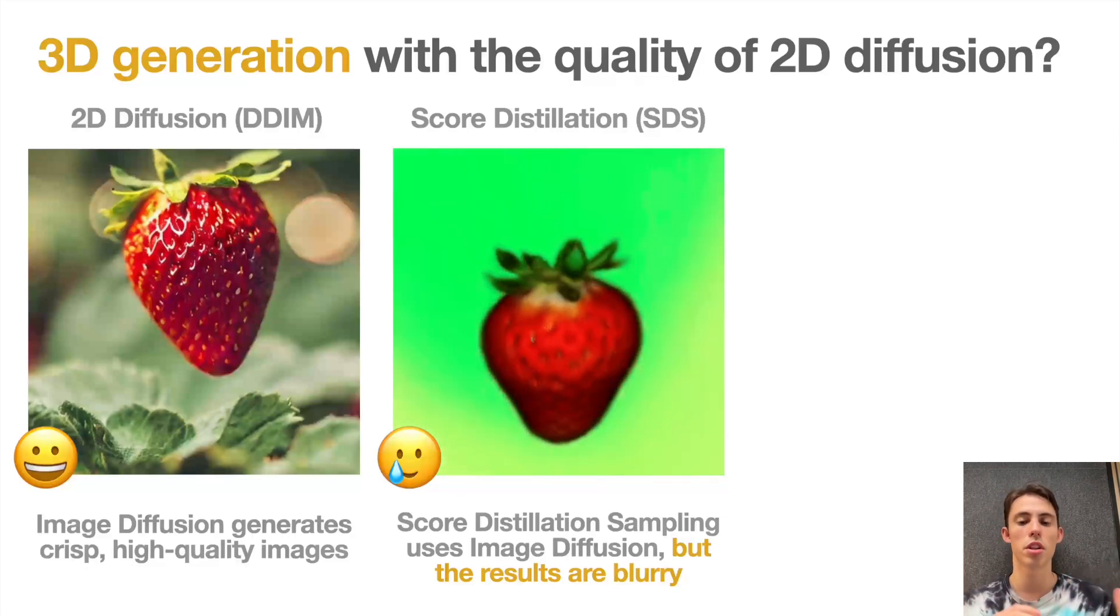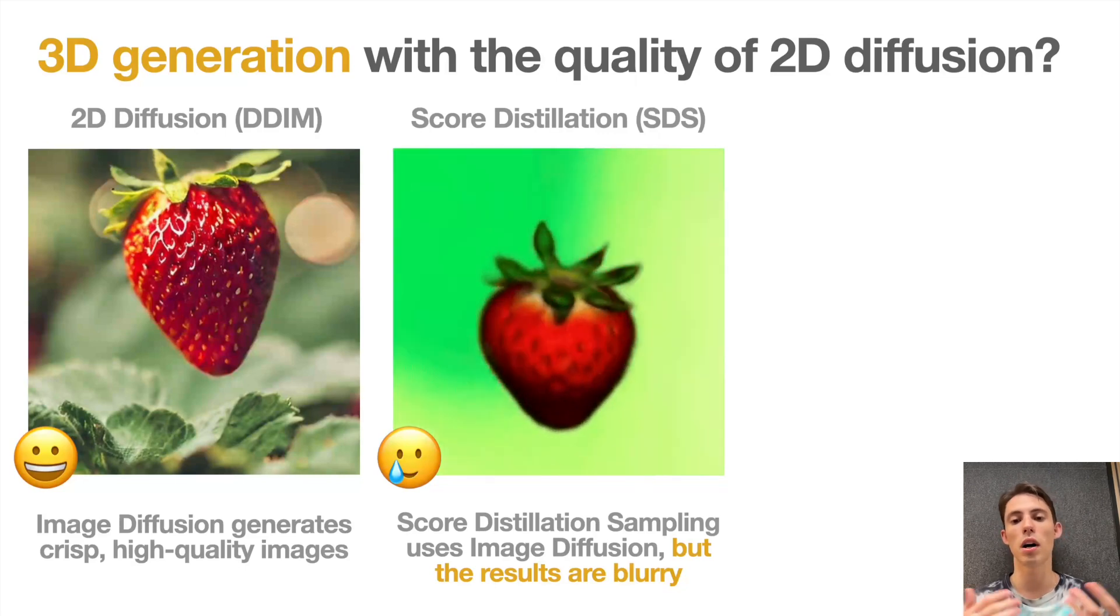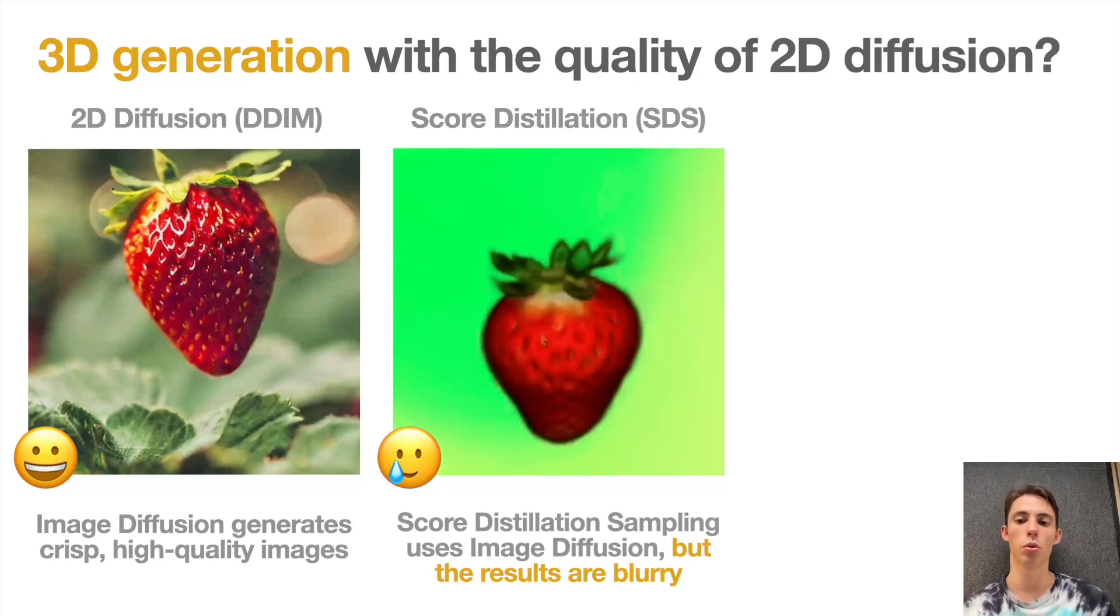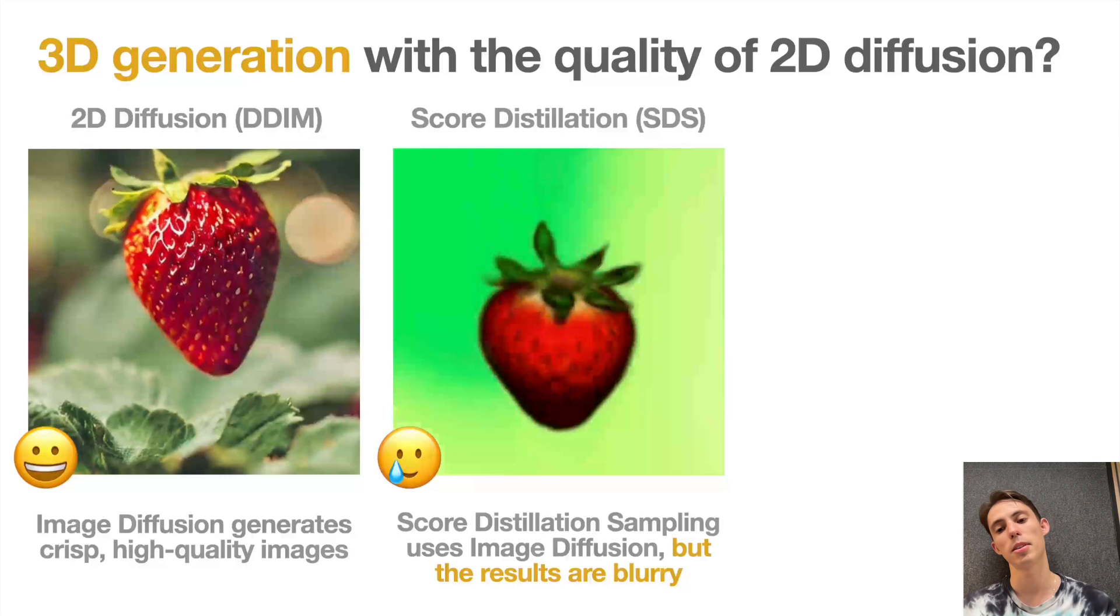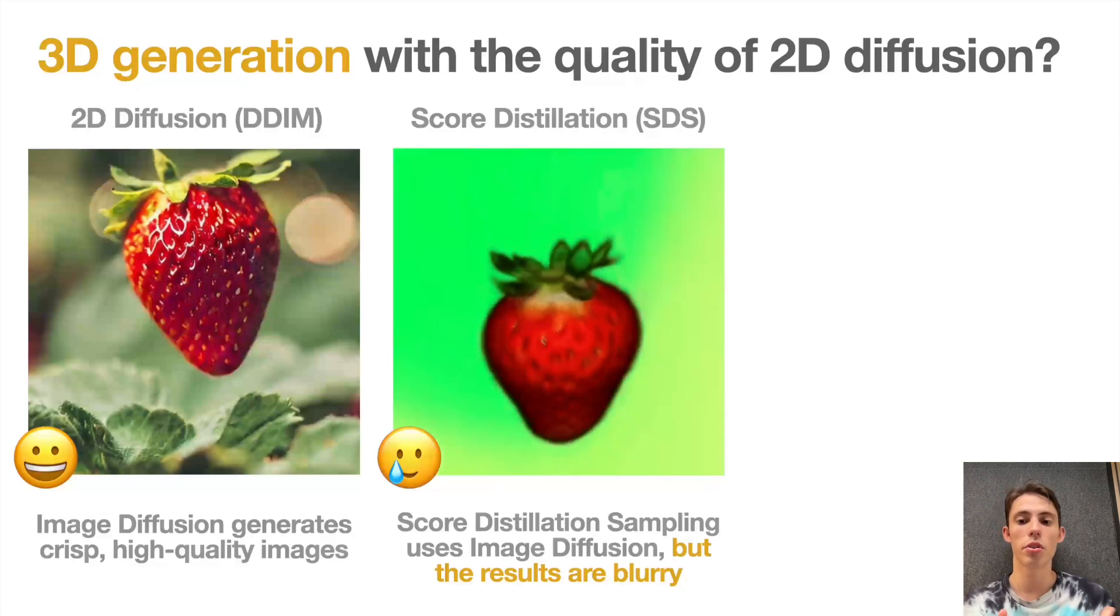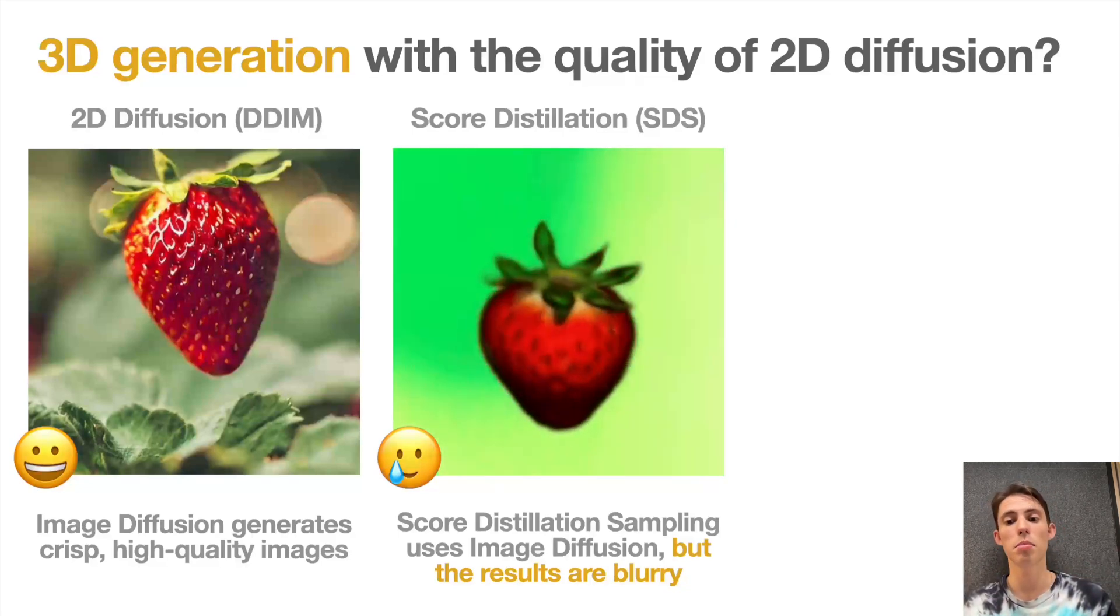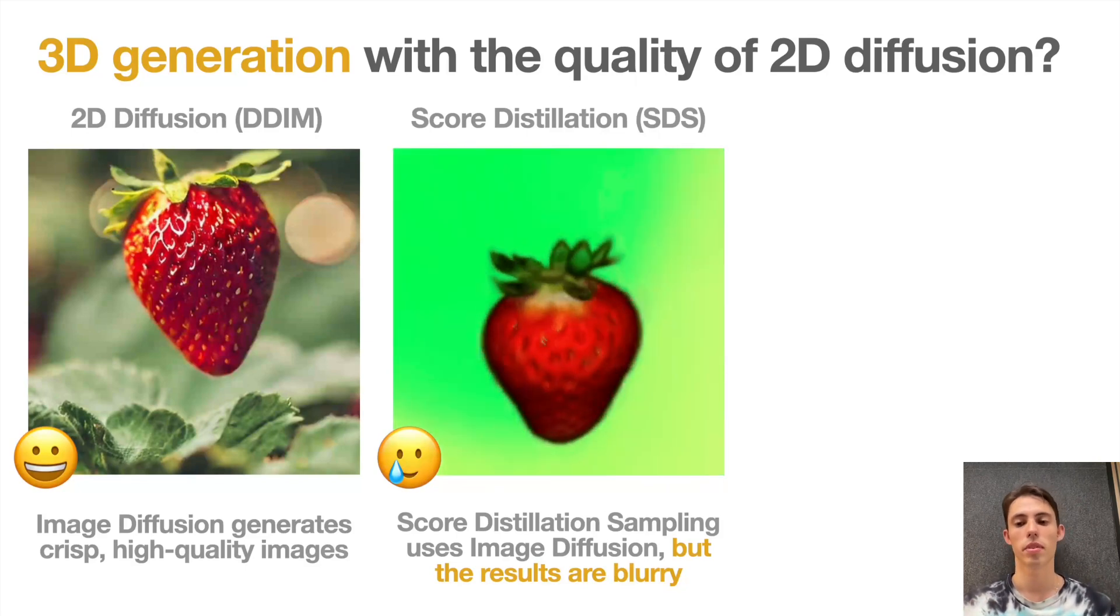On the screen you can see an example of such a 3D shape generated with one of the pioneering works called DreamFusion or SCORE distillation sampling. While it successfully generates the requested 3D shape, the results appear oversaturated and blurry, and they definitely fall short of the quality of the underlying diffusion model that you can see on the left.